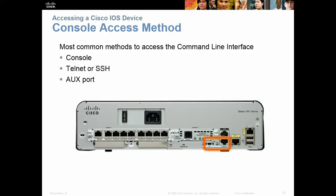This is the back of a 1941 router, showing how we would connect in. There are three different ways to use the command line interface: we can console in, we can Telnet or SSH, or we can use the auxiliary port. We've got the power switch, the power cable, Ethernet ports, a USB console, and an RJ45 Ethernet console port where we would plug in a console cable.